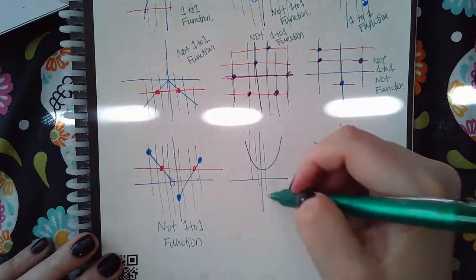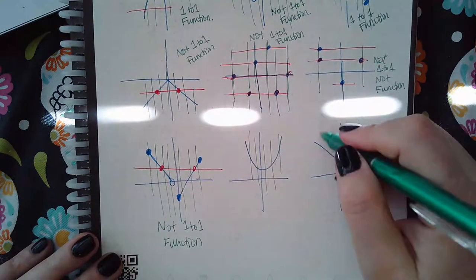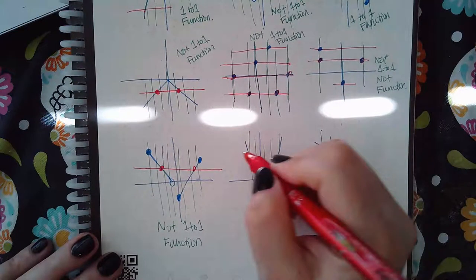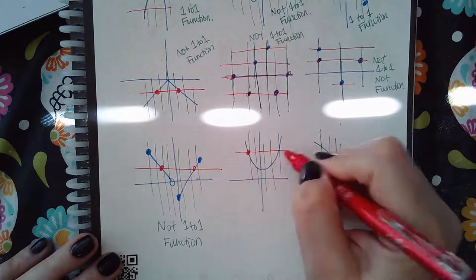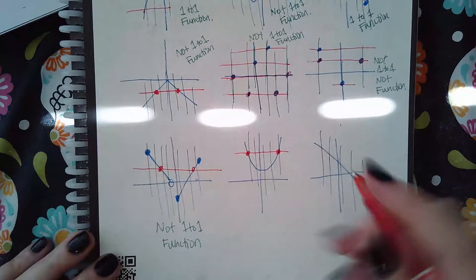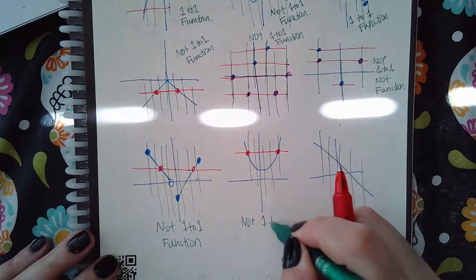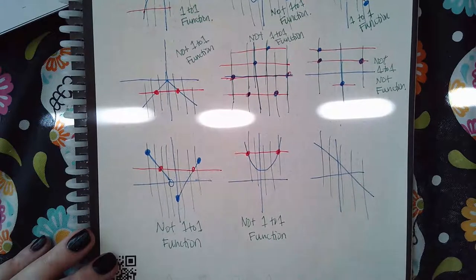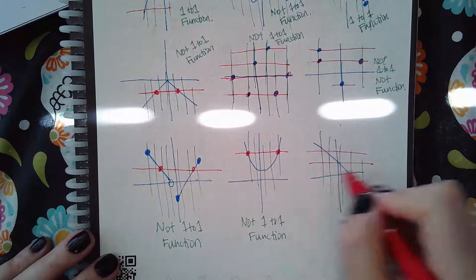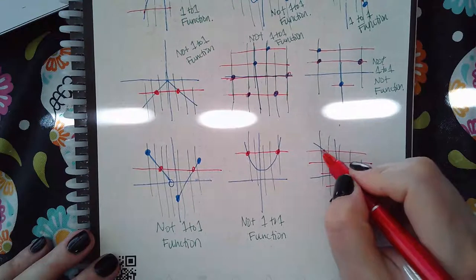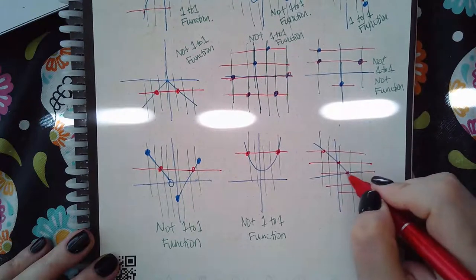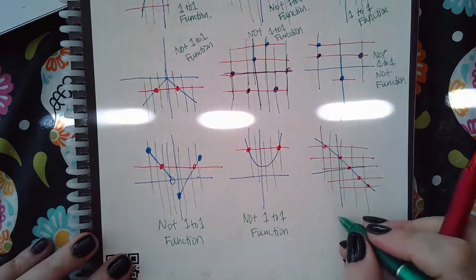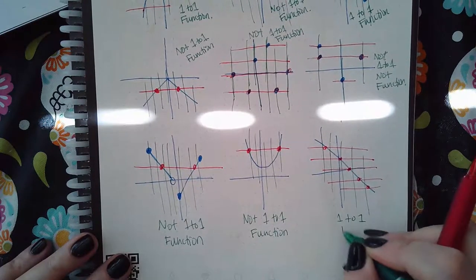Here, this one passes the vertical line test, so it is a function. This one passes the vertical line test, so it is a function. This one fails the horizontal line test, so it's not one-to-one. But this one passes the horizontal line test — each one of these red lines only touches the graph one time. So this one is a one-to-one function.